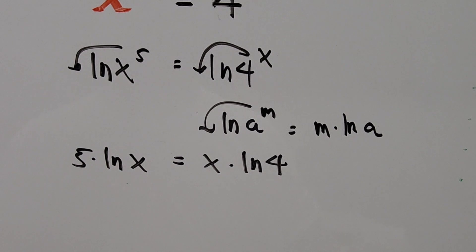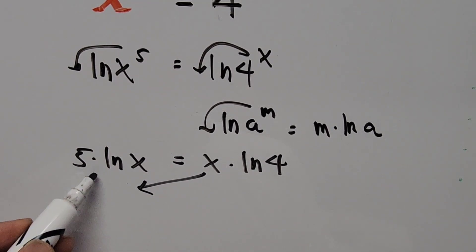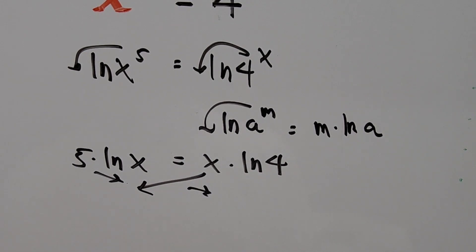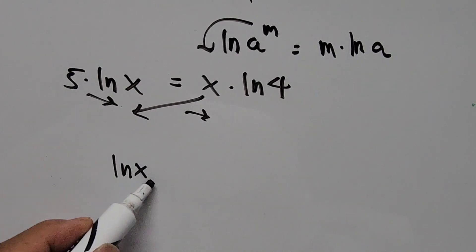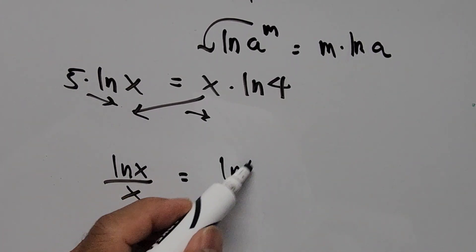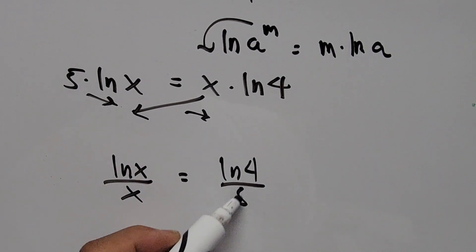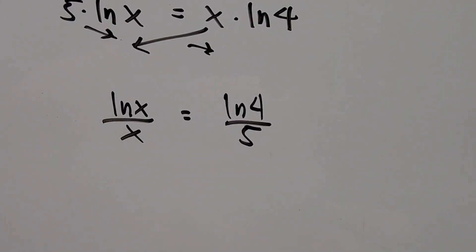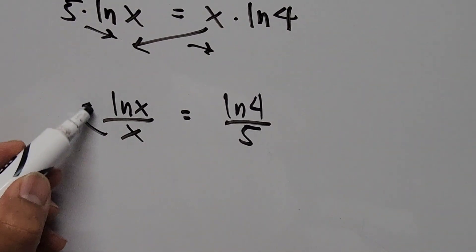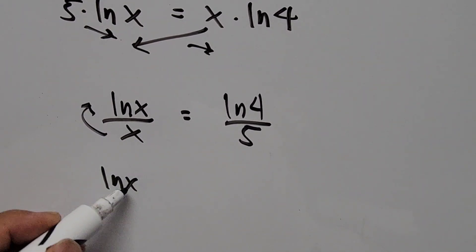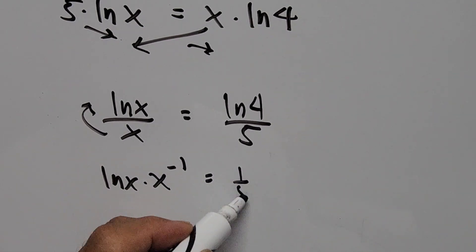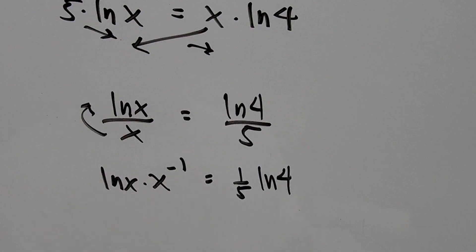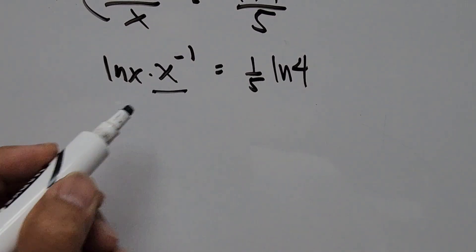Now we combine all variables on one side — isolate the variable on the left-hand side by moving x to the left and the constant to the right. We get ln of x divided by x equals ln of 4 divided by 5. Rewriting, we have ln of x times x to the negative 1 power equals one-fifth ln of 4.